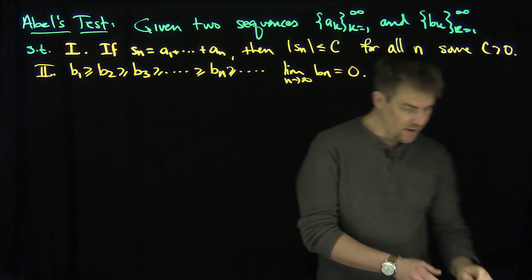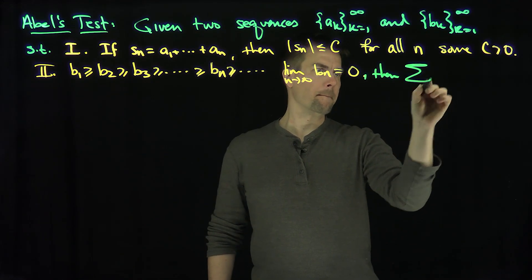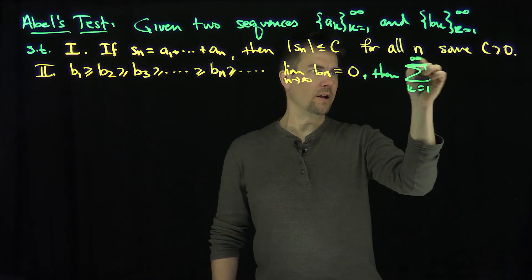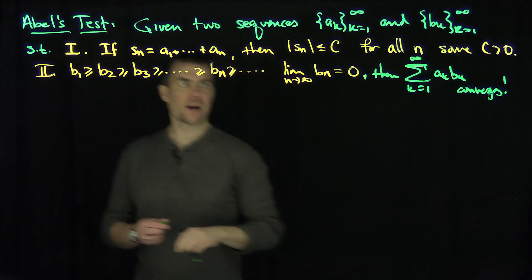If these two conditions are satisfied, then the following series converges. Then sum k goes from 1 to infinity of a_k b_k converges.